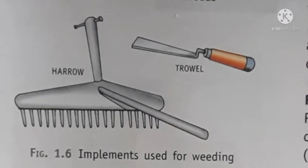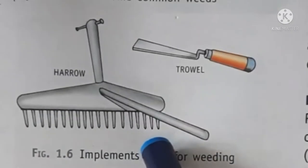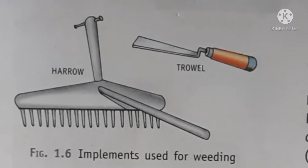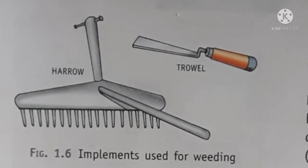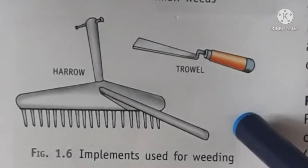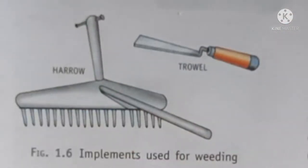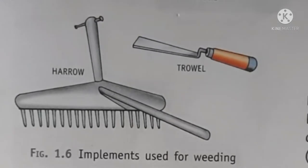One tool used for weeding is the harrow. You can also remove weeds from the ground using a trowel or harrow manually. However, if you use these tools manually, it takes a lot of time — especially if you have acres of field with crops growing.